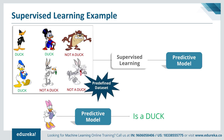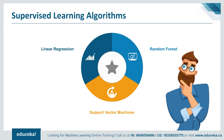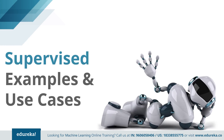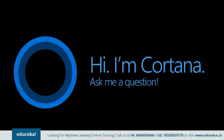Some popular supervised learning algorithms include linear regression, random forest, and support vector machines — we'll discuss these in the next video. Some popular use cases of supervised learning: Cortana or any other speech automation on your mobile phone trains using your voice, and once trained, it works based on that training. For example, saying 'Hey Siri, call Sam' results in a call being made to Sam — that is an application of supervised learning.